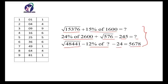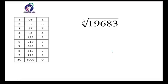Now we will see how to calculate the cube root of a given number. Friends, before finding the cube root we must know the cubes of numbers from 1 to 10 by heart. We should know the unit place digits of the cubes: 1 cubed ends in 1, 2 cubed ends in 8, 3 cubed ends in 7, 4 cubed ends in 4, 5 ends in 5, 6 ends in 6, 7 ends in 3, 8 ends in 2, 9 ends in 9, and 10 ends in 0.